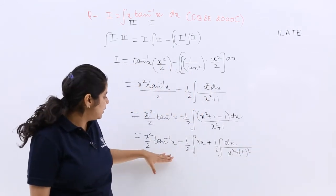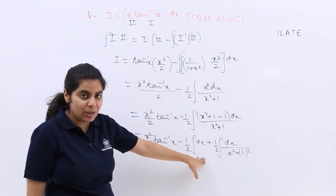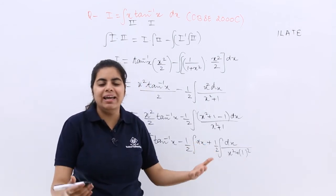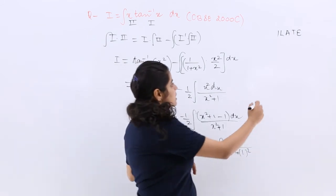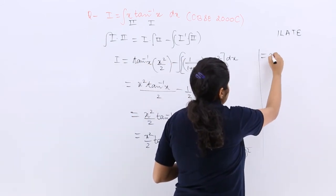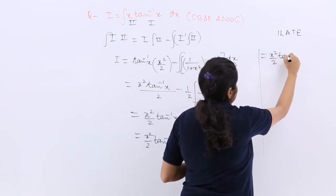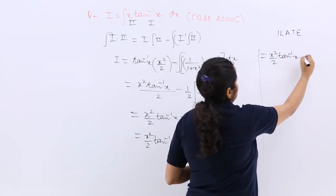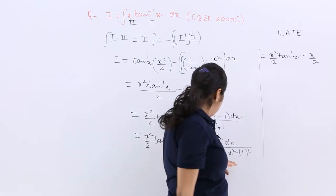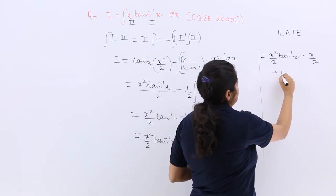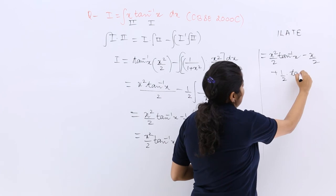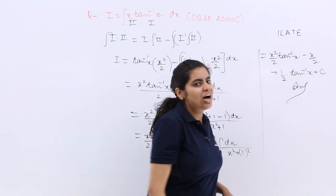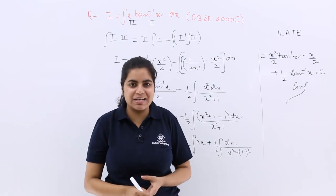Now see how to do it further. These things would not cause much trouble. 1 upon x square plus 1, 1 by a tan inverse x by a you can use. So it is moving to the other part of the board, x square by 2 tan inverse x minus x by 2 plus 1 by 2, 1 by a tan inverse x by a plus c, and that is how you obtain the answer to this type of question.